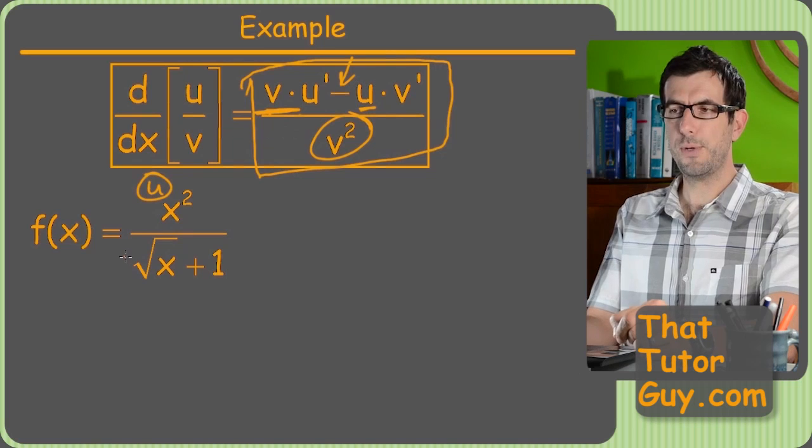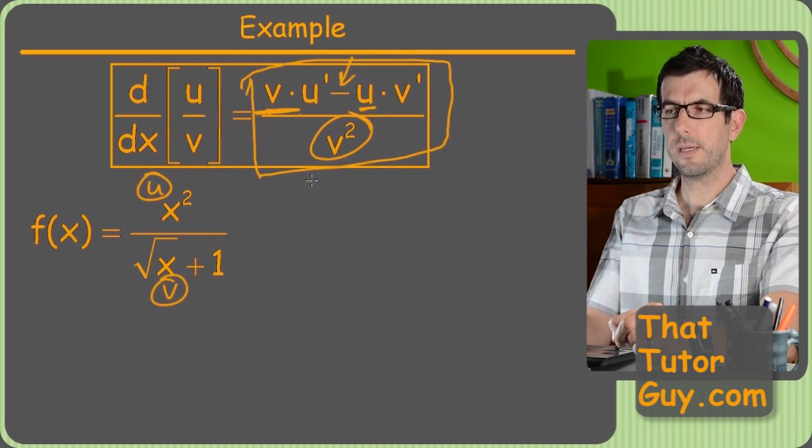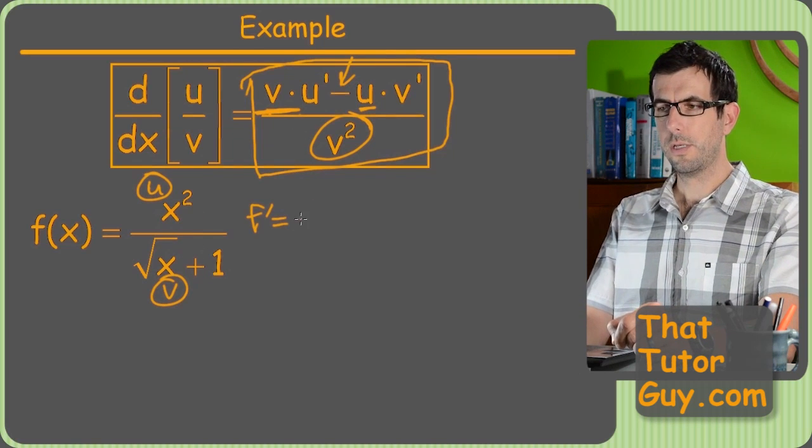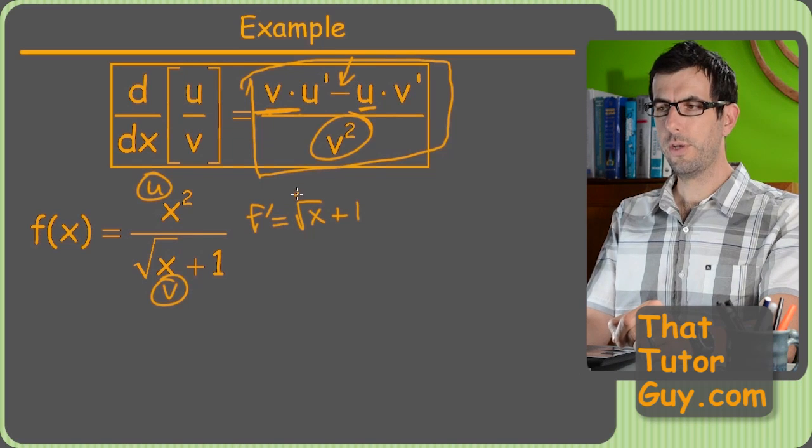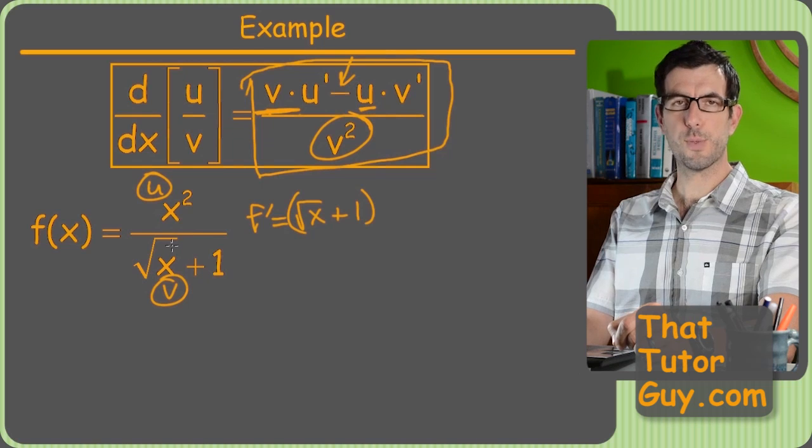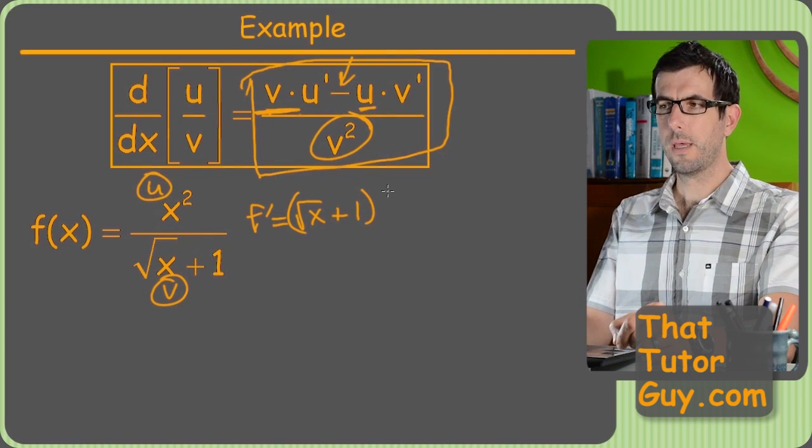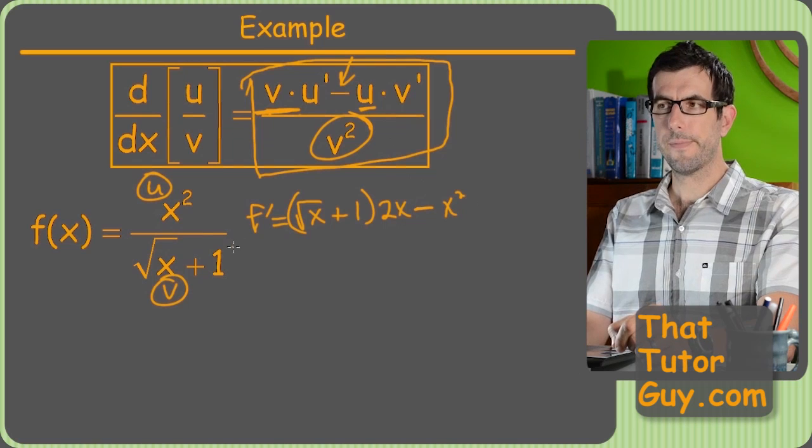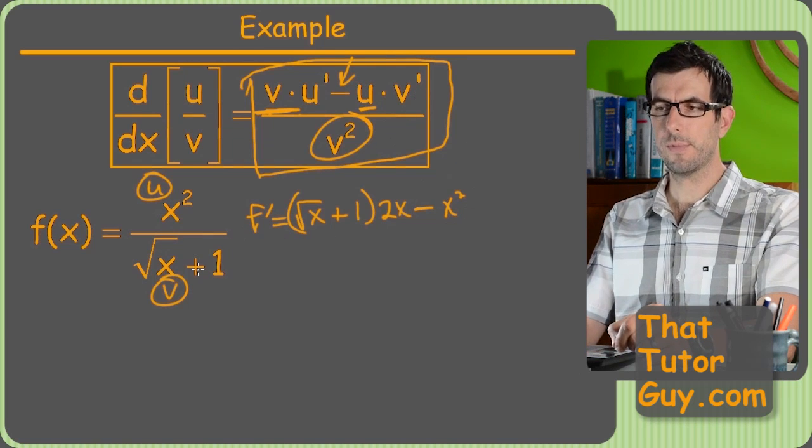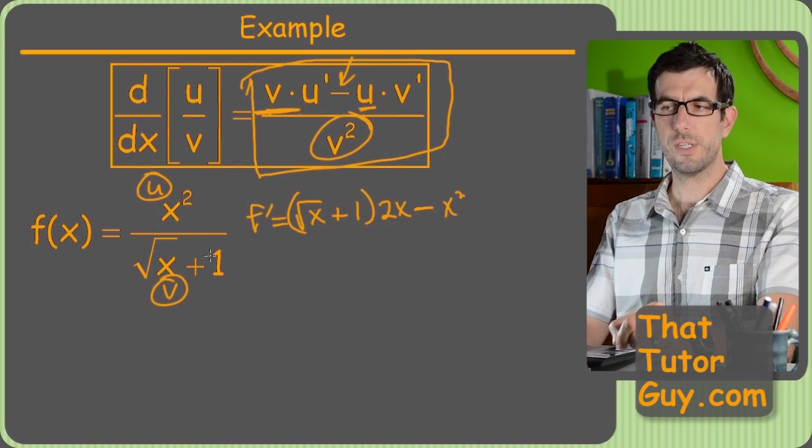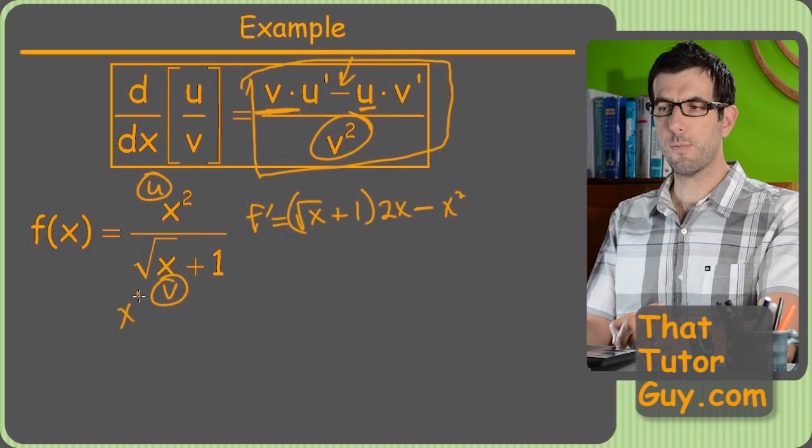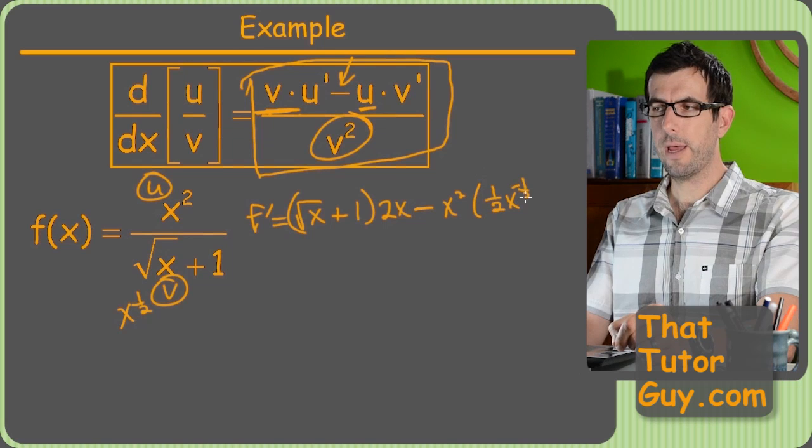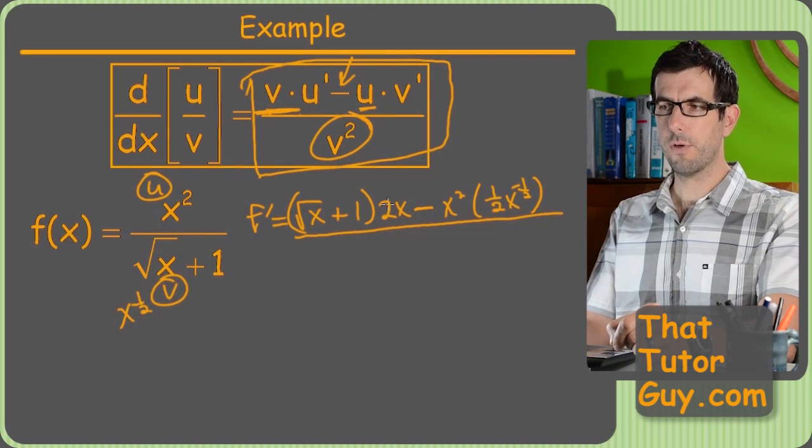So once again, we got a quotient rule opportunity here. So we'll label them U and V and plug and chug. Looks like F prime is going to equal V, which is square root of X plus one. Now it's important to notice here, this one is not under the square root. It's just square root of X, stop, plus one, times U prime, which can be 2X, minus U, which is X squared, times derivative of V. So what is the derivative of V? Well, the derivative of that one is just nothing. The derivative of root X, which is really X to the one half, right? So the derivative of X to the one half is one half X to the negative one half. And all that goes over V squared. So the original denominator is squared.